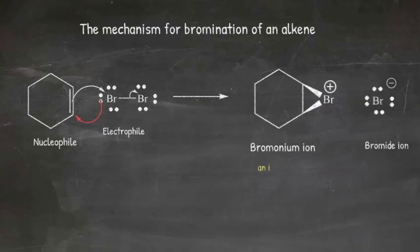This produces a bromonium ion intermediate. This whole flow of electrons occurs in a concerted process.